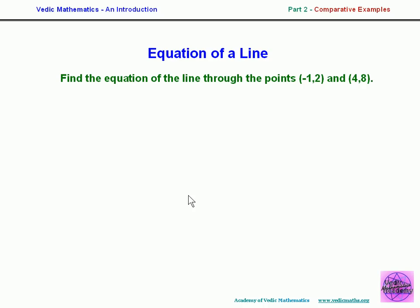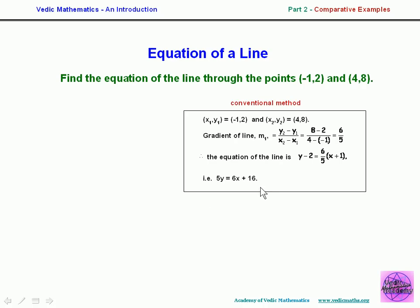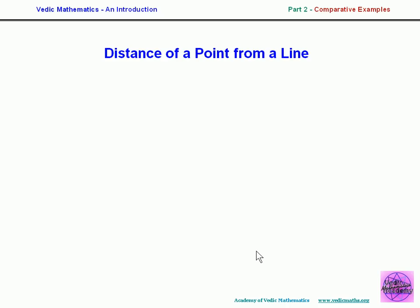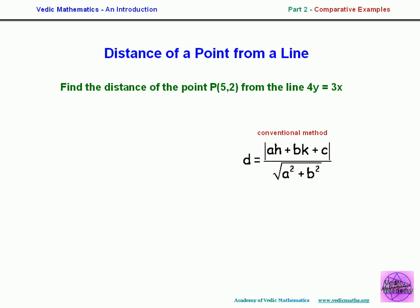For the equation of a line through two points, the conventional method requires working out the gradient, substituting into a formula, and then finding the equation — a multi-step process. The Vedic method gives you the answer immediately from the coordinates using the vertically and crosswise formula. Similarly, for the distance of a point from a line, the conventional approach uses a formula you must know and substitute into, whereas the Vedic system uses a property of Pythagorean triples — simply taking the line coordinates and point coordinates and subtracting the triples to get the answer straight away, such as 7 over 5.